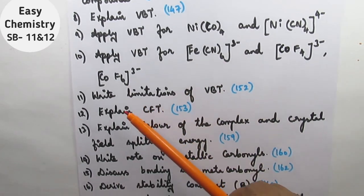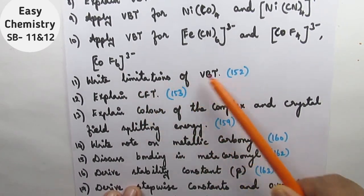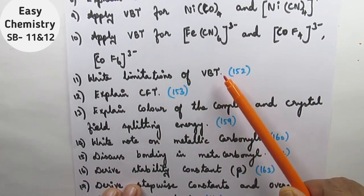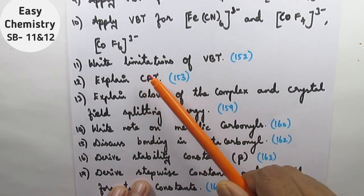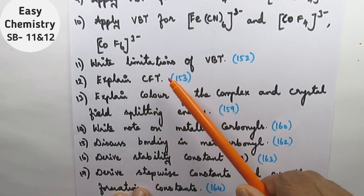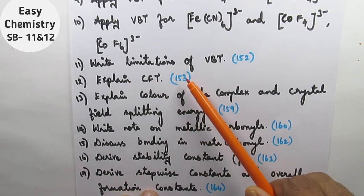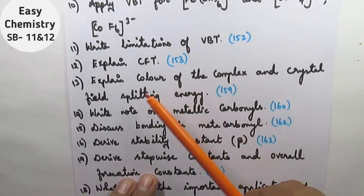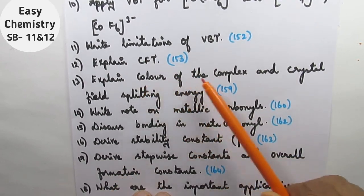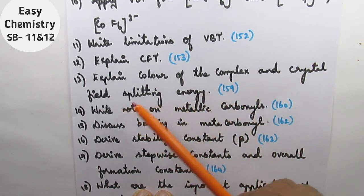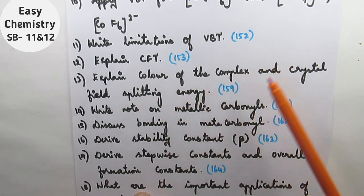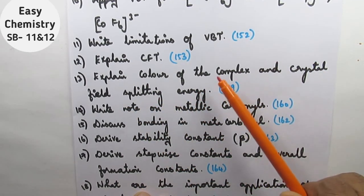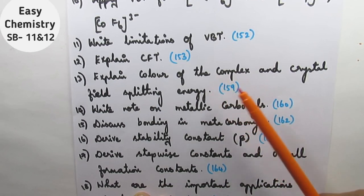Question number 11: write the limitations of VBT — this is very important. Explain CFT, crystal field theory, page number 153. Explain the color of the complex and crystal field splitting energy. This covers tetrahedral and octahedral complexes.